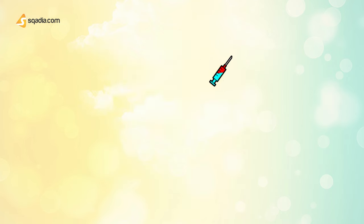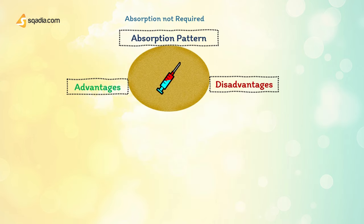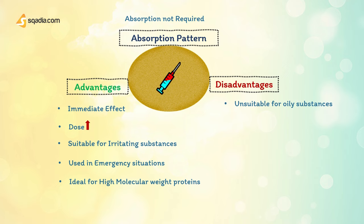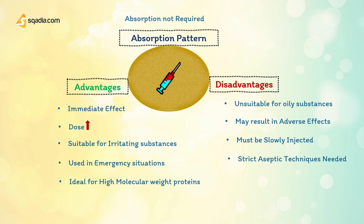Intravenous administration does not require absorption. Its advantages include immediate effects, and it is ideal if drugs are dosed in large volumes. It is suitable for irritating substances and complex mixtures, valuable in emergency situations, dosage titration is permissible, and it is ideal for high molecular weight proteins and peptide drugs. Disadvantages include unsuitability for oily substances, bolus injection may result in adverse effects, most substances must be slowly injected, and strict aseptic techniques are needed.